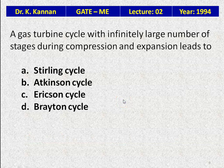A gas turbine cycle with an infinitely large number of stages during compression and expansion leads to the Ericsson cycle. The gas turbine normally uses the Brayton cycle — constant pressure heat addition, constant pressure heat removal, isentropic compression, and isentropic expansion. When you have multiple stages of combustion and expansion, it becomes the Ericsson cycle.